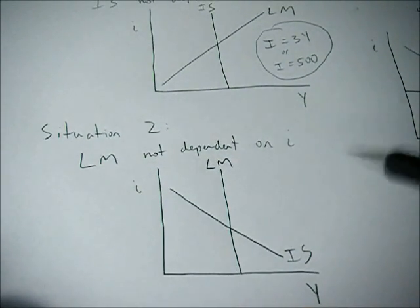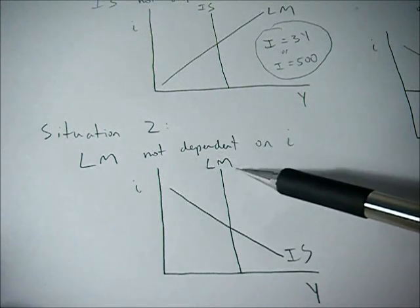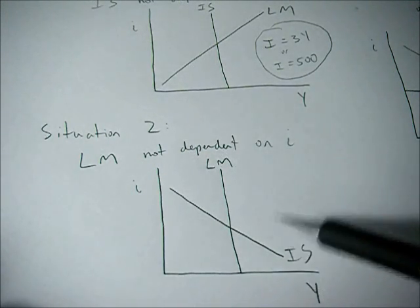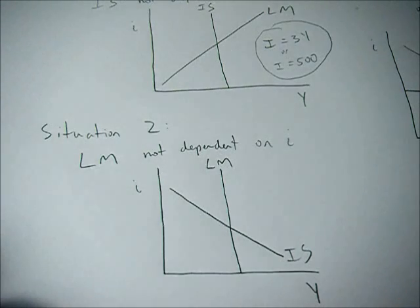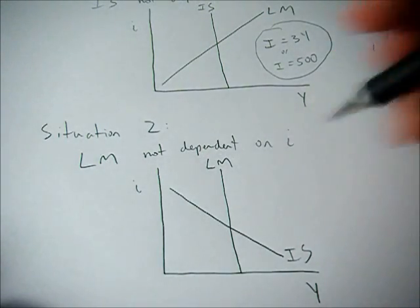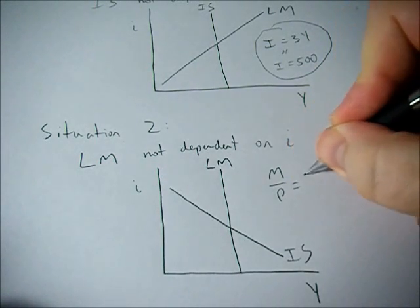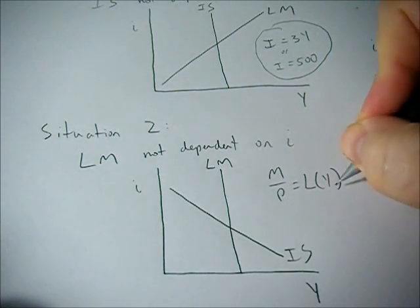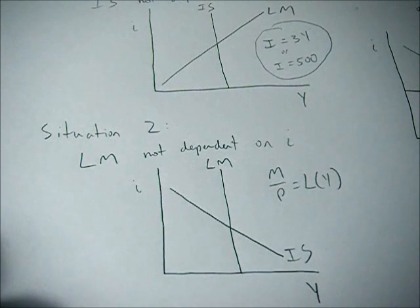we have our downward sloping IS curve, but we have our vertical LM curve. So here, the LM equation is not dependent on the interest rate. So we would have M over P equals LY with no little i in that equation.